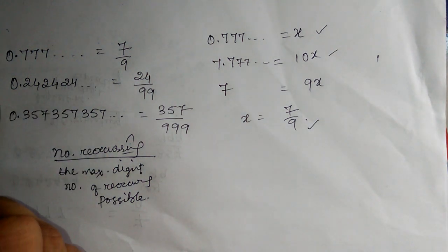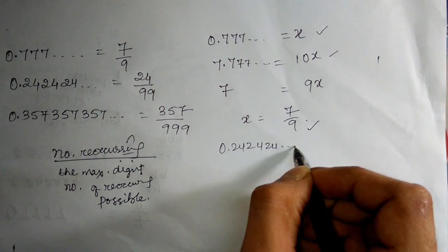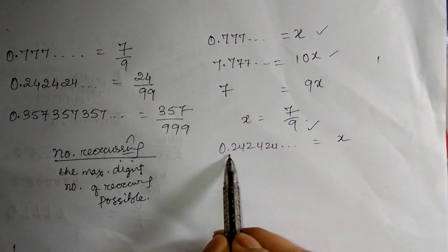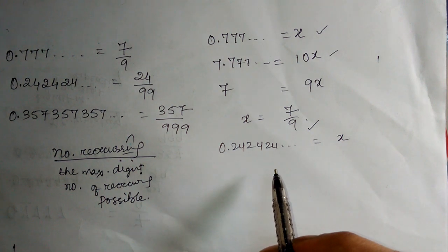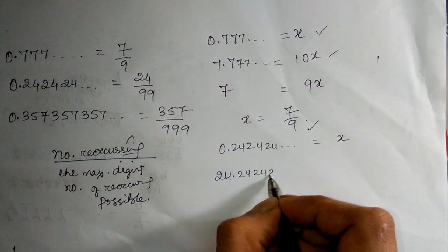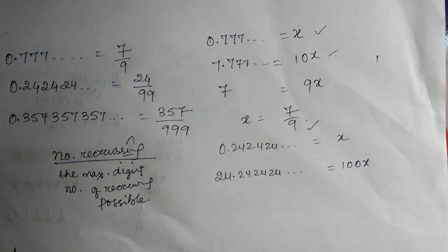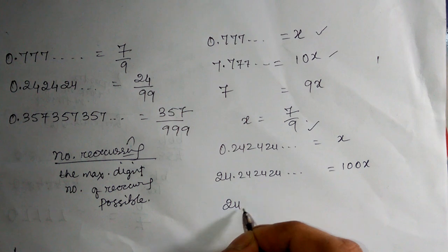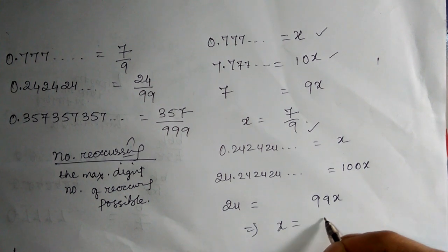Now the second case: 0.24242424 and so on. Let this number be x. As two digits are repeating — 2 and 4 — we multiply both sides by 100, so it becomes 24.24242424... and this becomes 100x. Subtract x from 100x: 100x minus x gives 99x, and 24.2424... minus 0.2424... gives 24. So 24 equals 99x.